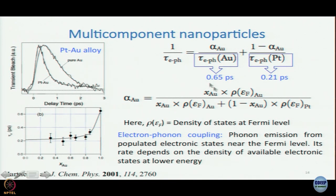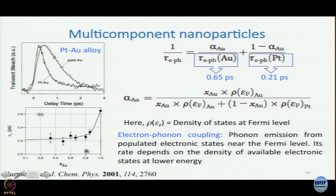The electron-phonon coupling time for gold is 0.65 picoseconds and for platinum is 0.21 picoseconds. The density of states values are obtained by TDDFT calculation. The simulated curve from this equation matches the experimental points well, giving the most important take-home lesson: for multi-component systems you must consider the density of states, not just the mole fractions.